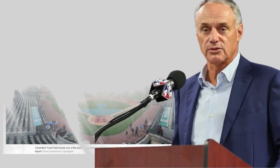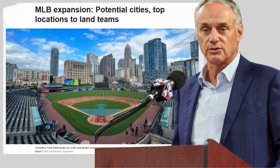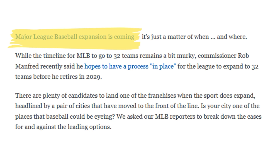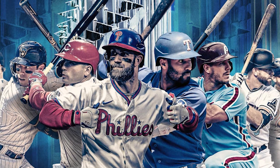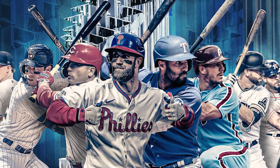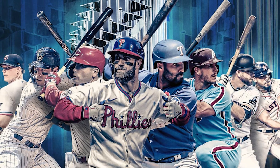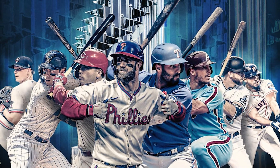MLB Commissioner Rob Manfred has said that he will be stepping down following the 2029 MLB season, and he stated that he plans to have an MLB expansion plan in place by that time, as the manifest destiny of Major League Baseball is expected to come to fruition. That would grow baseball to 32 teams and change the layout of the leagues as we know it.